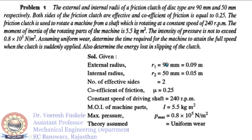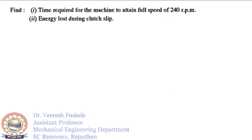Given data: external radius r1 = 90 mm, internal radius r2 = 50 mm. Both sides of the friction clutch are effective, so number of effective surfaces n = 2. Coefficient of friction μ = 0.25. Shaft speed N = 240 rpm. Moment of inertia I = 5.5 kg·m². Maximum pressure p_max = 0.8×10⁵ N/m². Since we are using uniform wear theory, pressure × radius = constant, meaning pressure is inversely proportional to radius, so maximum pressure occurs at the inner radius. We need to find the time for the machine to attain full speed of 240 rpm and the energy loss during clutch slip.